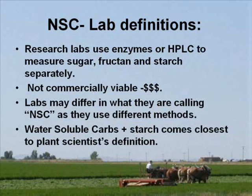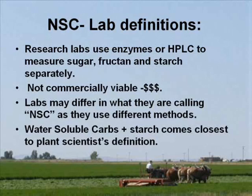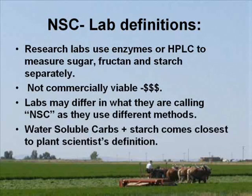Analytical labs tend to define carbohydrates by the way they're sorted out by a particular analytical method. When a lab says sugar, you need to know the analytical procedure they used. Carbs that are soluble in water are different from ethanol-soluble carbs, both called sugar. Research labs can justify expensive analytical procedures like HPLC and specific enzymes to quantify just fructans or specific types of sugar like glucose and fructose separately, but that's too expensive for the average consumer who needs to know how much sugar is in their hay. Water-soluble carbs plus starch comes closest to a plant scientist's definition of non-structural carbs — which is sugar, fructan, and starch.